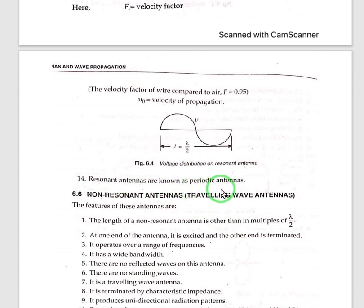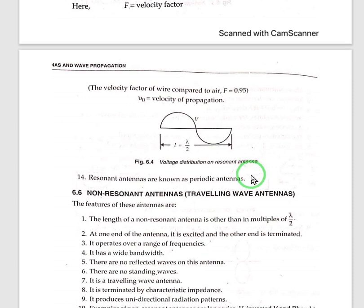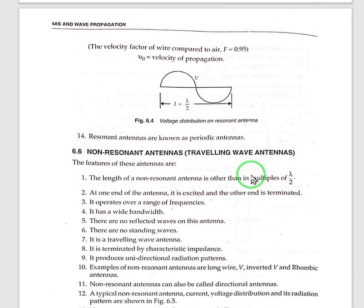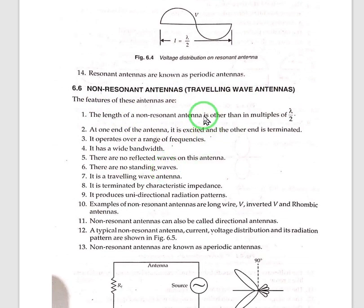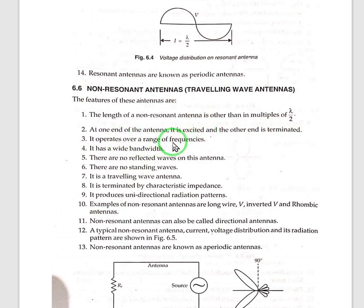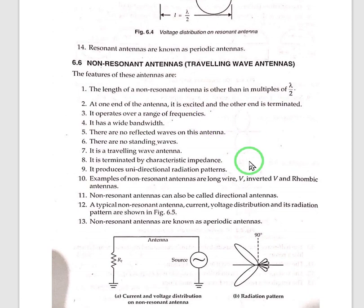Resonant antennas are also known as periodic antennas — that is the main feature of this resonant antenna. The second category in this classification is the non-resonant antenna, also known as travelling wave antennas. The features of these antennas are: it does not have the length of lambda by 2 or a multiple of lambda by 2.